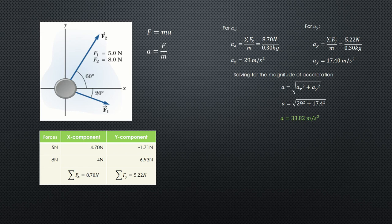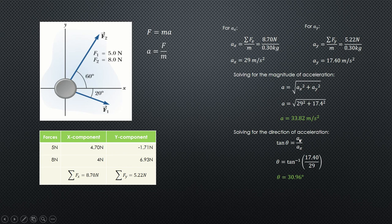Now the angle. Solving for the angle or the direction of the acceleration, using tangent theta equals y over x. So y over x: acceleration y is 17.40 and acceleration along x is 29. Dividing both sides by tangent, you'll get arc tan of 17.40 divided by 29.